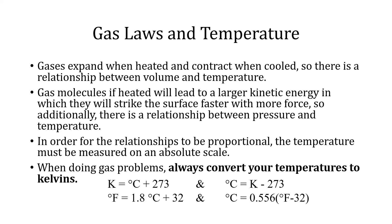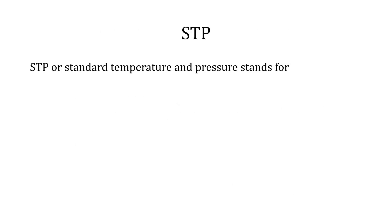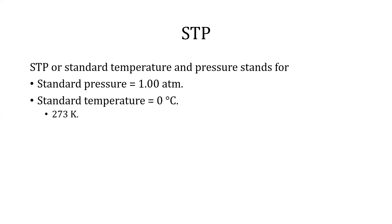If your temperature is in Fahrenheit, convert it to Celsius using: 5/9 (or 0.556) times the quantity (Fahrenheit temperature minus 32). STP is a common reference point for comparing conditions of a substance. STP stands for standard temperature and pressure, where the pressure is 1 atm and the temperature is 0 degrees Celsius, which equals 273 Kelvin.